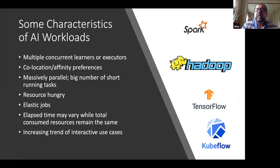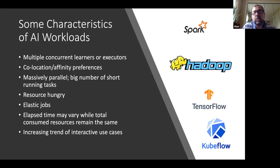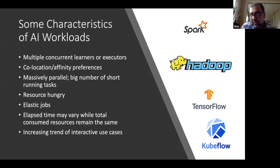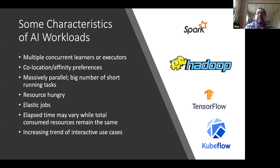Some characteristics of the AI workloads we're targeting: the use of Kubernetes for running AI and machine learning workloads is on the rise. These workloads typically have multiple concurrent learners or executors — for example, if you're using Spark, you have Spark executors; if you're doing deep learning, you have deep learning learners. They need to run concurrently in a distributed fashion, have collocation or affinity constraints, and may have specific hardware requirements such as GPUs and a specific number of GPUs per learner.